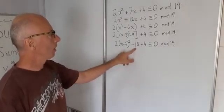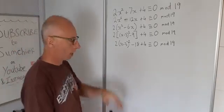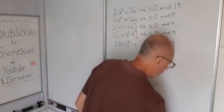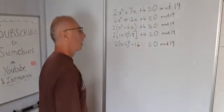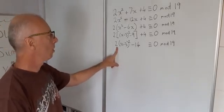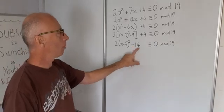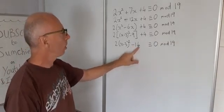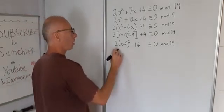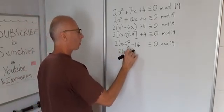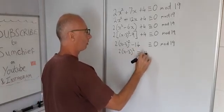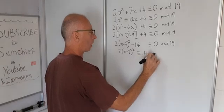Now we can simplify this and just put that in as -14. Little problem here with this 2. So let's start by getting this 14 on the other side—in modulus we can do that, that's not a problem. So now we've got 2(x - 3)² ≡ 14 mod 19.